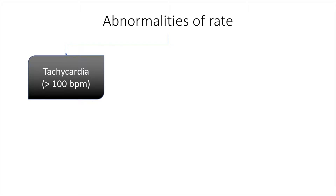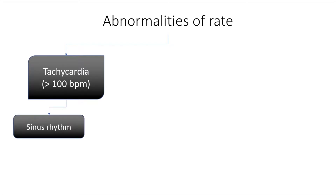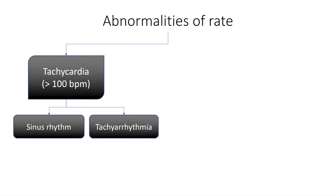The abnormalities of rate can be tachycardia, which is a heart rate of more than 100 beats per minute, and this can be either in sinus rhythm or a tachyarrhythmia. Sinus rhythm is when each QRS on the ECG is preceded by a P wave, meaning the impulse originates in the sinus node, travels to the AV node from where it reaches the left ventricle through the HIS and Purkinje fibers. However, in tachyarrhythmia, this chain of command is not followed.